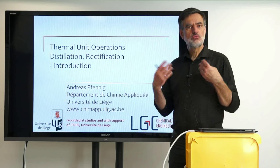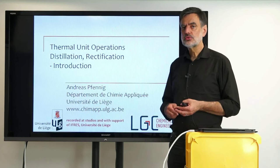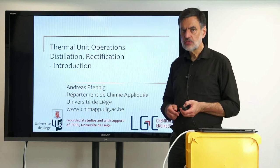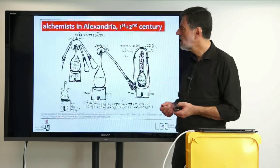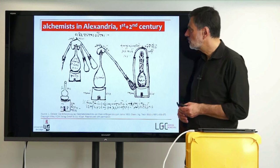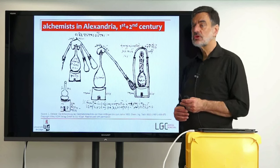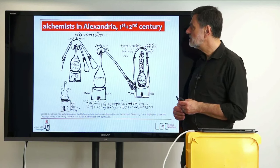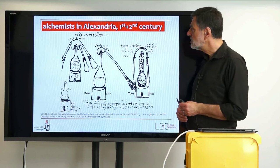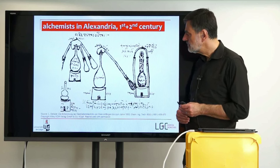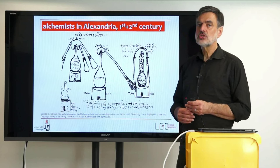If one wants to introduce a new topic, one possibility is to start out historically. And if we look back at distillation and where it started, well, the start actually is not known, but we have very early documents that describe that distillation is a very old process. It has already been performed by the alchemists, for example, in Alexandria in the first and in the second century.